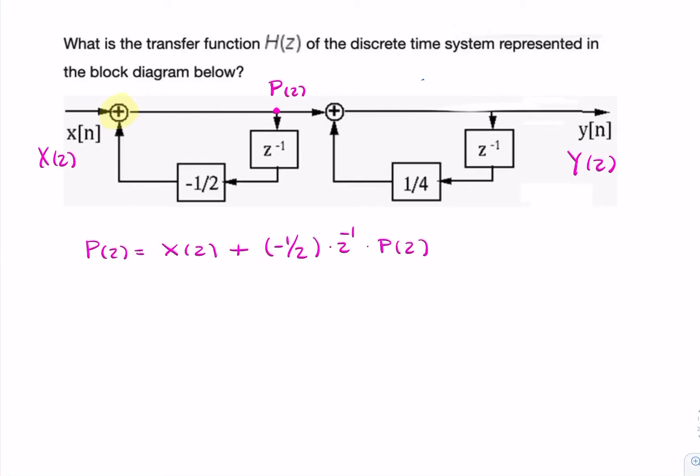Because it's P that's being delayed and then multiplied by minus half. Now I can rearrange that to write P(z) as a function of x(z). So that's x(z) divided by 1 plus half z to the minus 1.